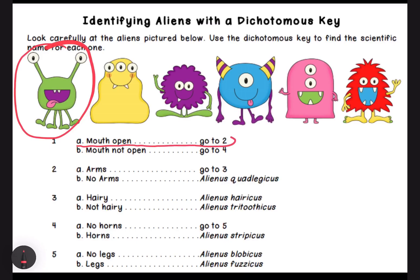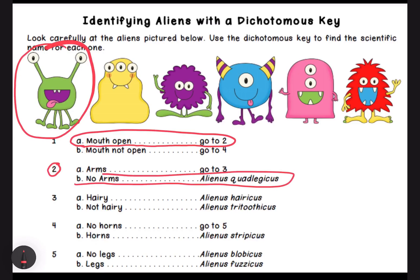Mouth open — go to number two. Here I have number two and it's going to ask another question: does this monster have arms or does it not have arms? If I look at this monster, I'm not seeing arms. So right here it says no arms, and that means that it is an Alienus Quadrilitecus.